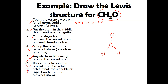And then step six: check to make sure the central atom has a full octet — if not, form double or triple bonds. In this case, if you look at the carbon, it doesn't have a full octet — it's only got six electrons. We can't take any electrons from hydrogen since it can't form more than one bond. So we're going to take off a pair from oxygen and make a double bond.